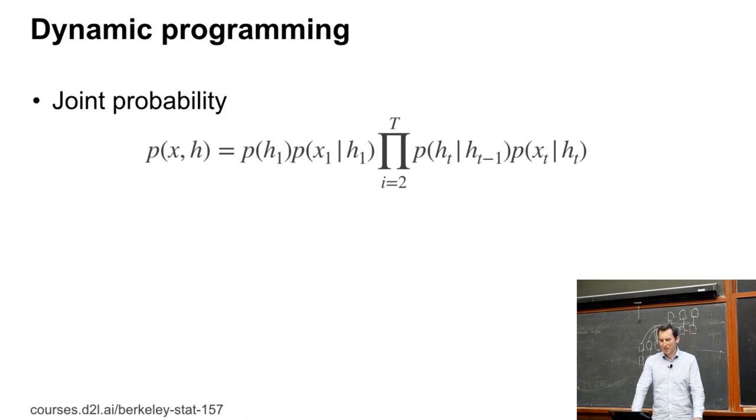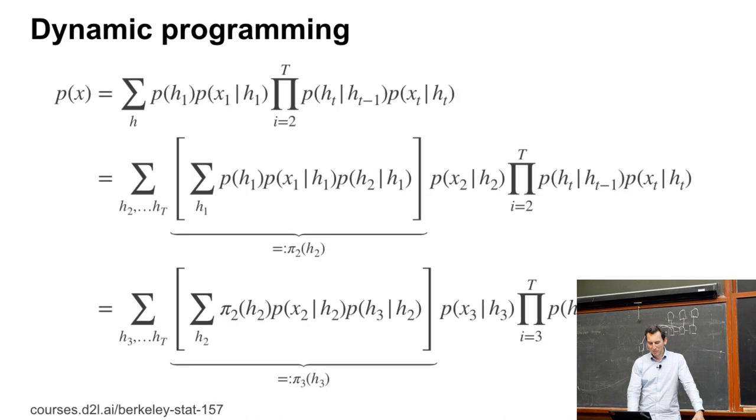So let's write out the joint probability. P of X and H is P of H1, hidden state, times P of X1 given H1. So that's the emissions probability. And then I have this very long chain P of HT given HT minus 1 times P of XT given HT. Actually, it could have made my life a little bit easier by introducing artificially the symbol H0 and then just written P of H1 given H0 where H0 is the start symbol. It would have looked prettier, but bear with me for a moment.